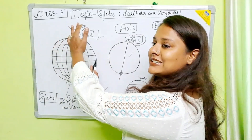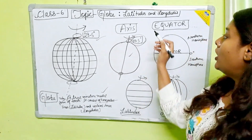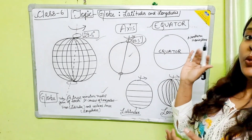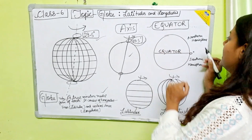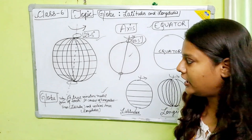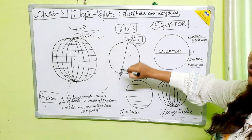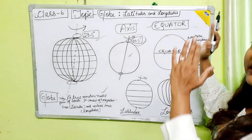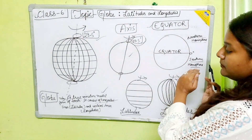That's why the globe is slightly tilted. Now, when we talk about a term called equator — equator is also an imaginary line which divides the globe or the Earth into two equal halves. The axis connects the North Pole with the South Pole — it is an imaginary line. The equator divides the globe or the Earth into two equal halves: the Northern Hemisphere and the Southern Hemisphere.